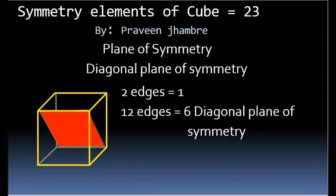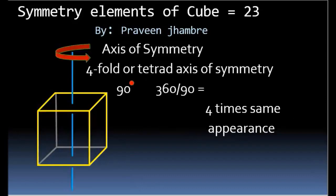The last symmetry element is the axis of symmetry. The axis of symmetry is an imaginary axis passing through the center, about which if a cube is rotated through a particular angle theta, it gives 360 divided by theta times the same appearance. There are the following types of axis of symmetry.